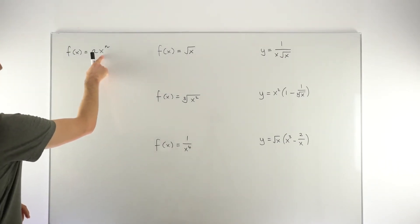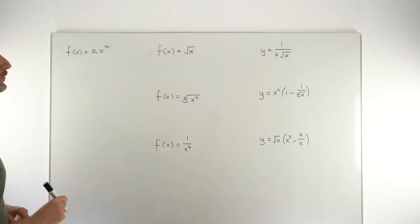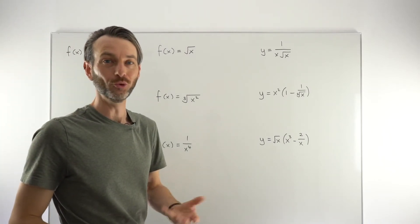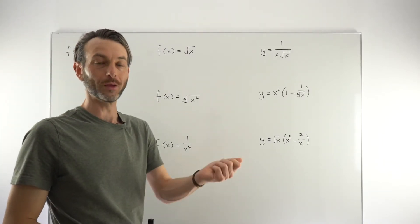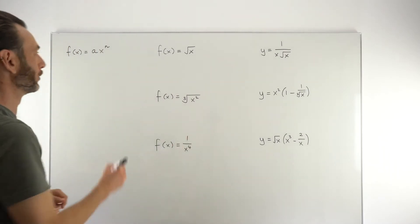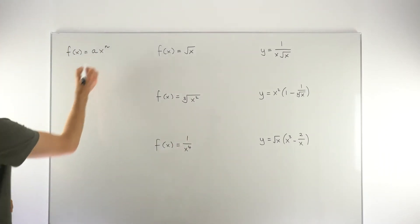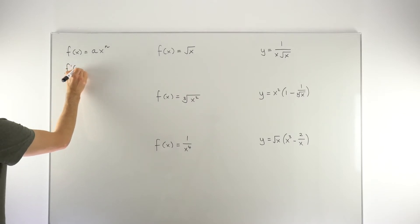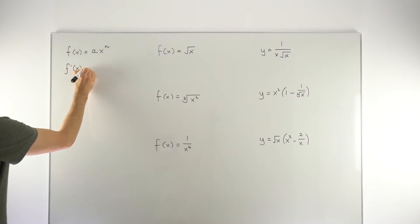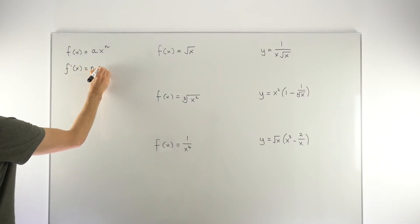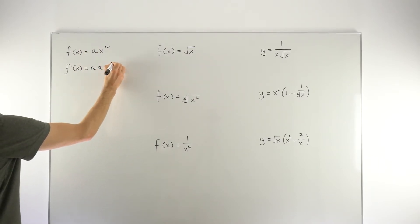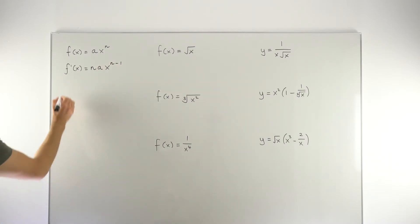If you've got the terms in your function in the format AX to the N, then you can just directly apply the power rule. The power rule says: multiply by the power and then reduce the power by one. So in this general form, our derivative F prime of X would be N times A times X to the N minus one.